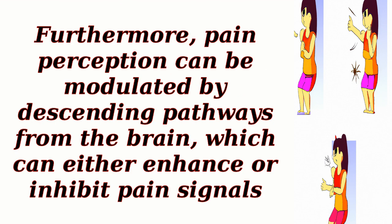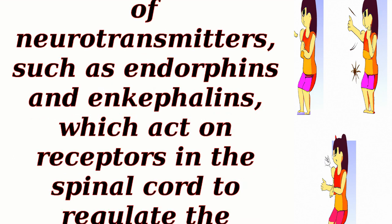Furthermore, pain perception can be modulated by descending pathways from the brain, which can either enhance or inhibit pain signals. These pathways involve the release of neurotransmitters, such as endorphins and enkephalins, which act on receptors in the spinal cord to regulate the transmission of pain signals.